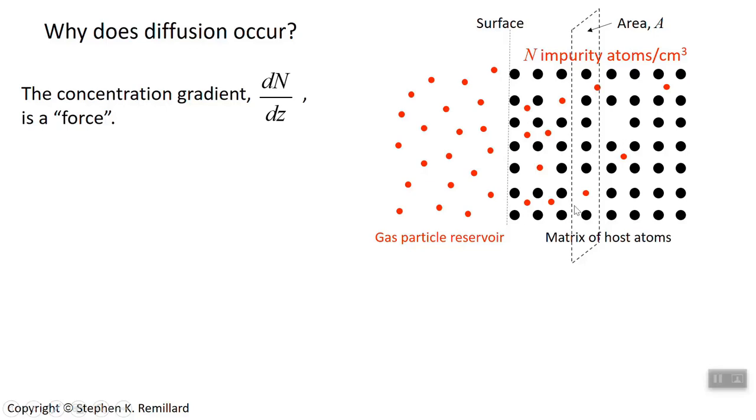If you have a whole bunch of dopant atoms to the left and not so many to the right, they're going to slowly work their way over, regardless of what the matrix atoms are doing. So this concentration gradient, dn by dz, n is the concentration of these red guys inside the material. Its gradient, as you go in, z, I didn't show it, z is to the right. The gradient is basically the force.